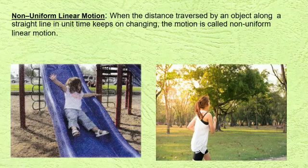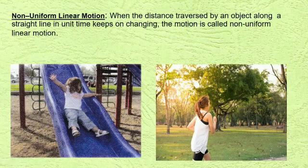So, what is non-uniform linear motion? When the distance traveled by an object along a straight line in unit time keeps on changing, the motion is called non-uniform linear motion. You all have played on a slide. When you come down from the slide, you experience that your speed is increasing continuously. Such motion is non-uniform linear motion. Even the motion of a person jogging in the garden is an example of non-uniform linear motion.